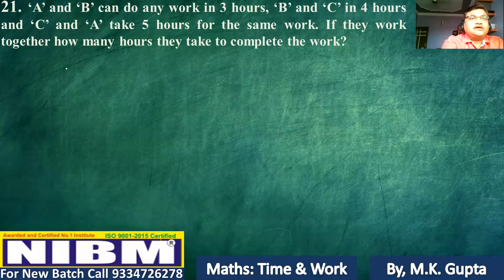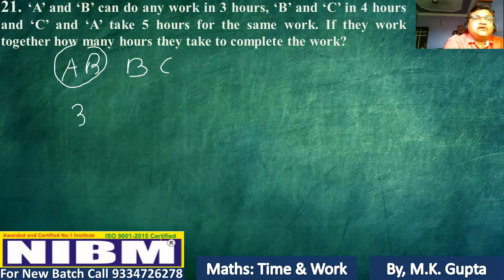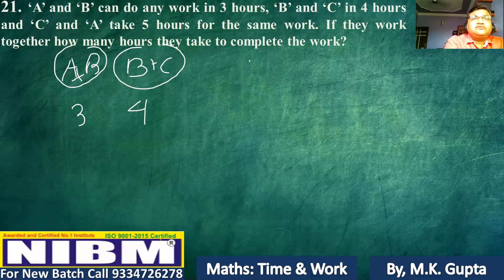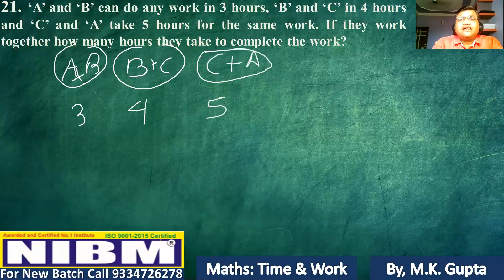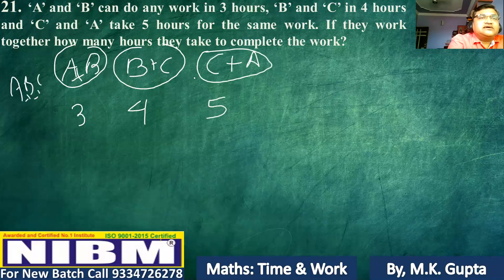In question 21, A and B can do a work in 3 hours. If they work together, how many hours do they take to complete the work? If all work together, then two times ABC is equal to 1 by 3 plus 1 by 4 plus 1 by 5.